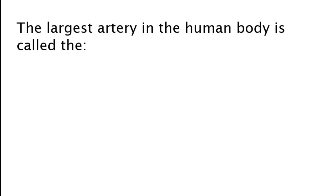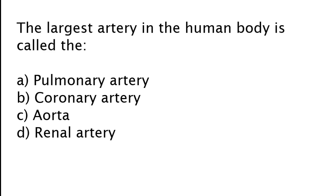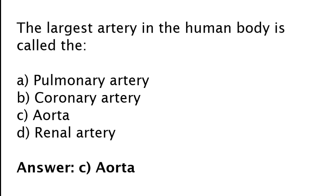The largest artery in the human body is called: pulmonary artery, coronary artery, aorta, or renal artery? The correct answer is option C. The largest artery in the human body is called the aorta.